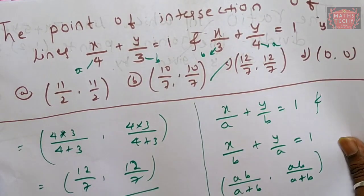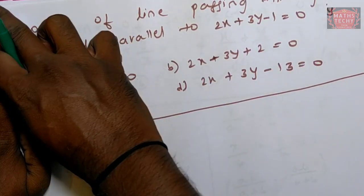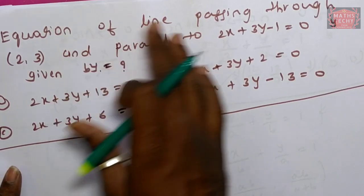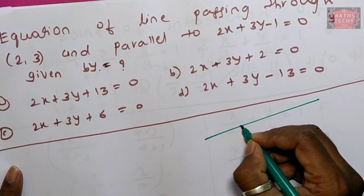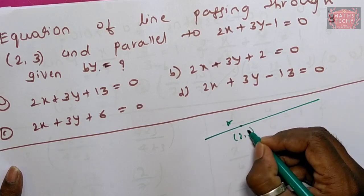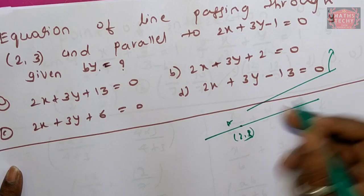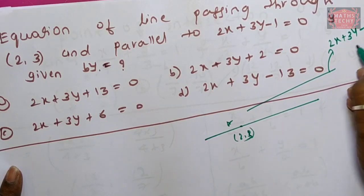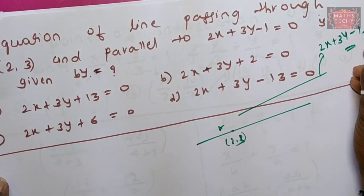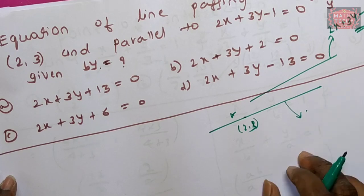Now let's do the next problem. This is commonly known as a straight line. The line is passing through a point and a parallel vector is passing through a point. This line is parallel to the line 3x plus 3y minus 1 equals zero. What is the equation of this line?